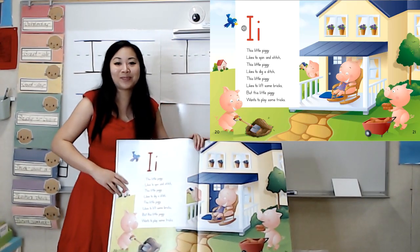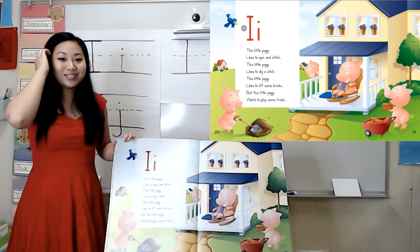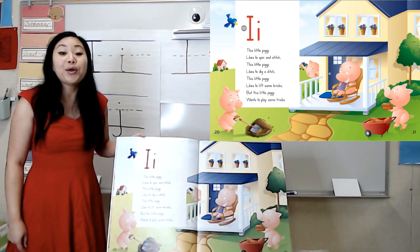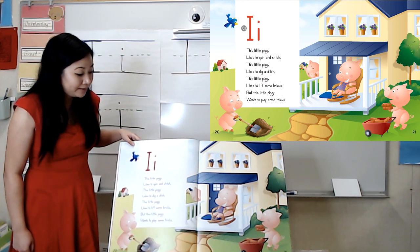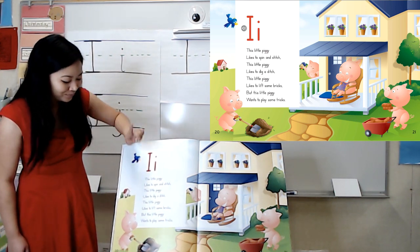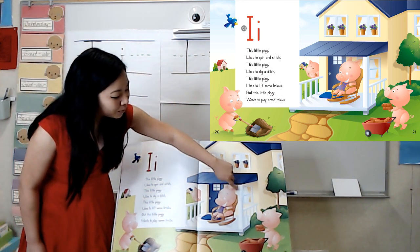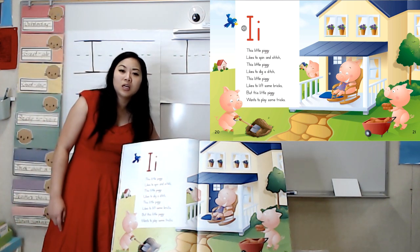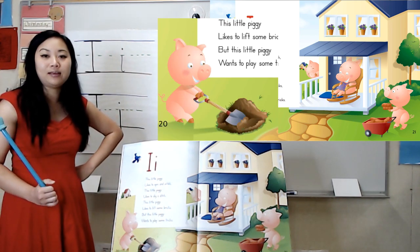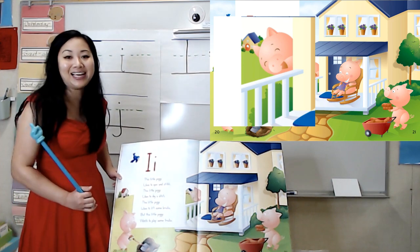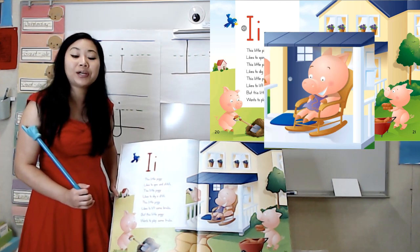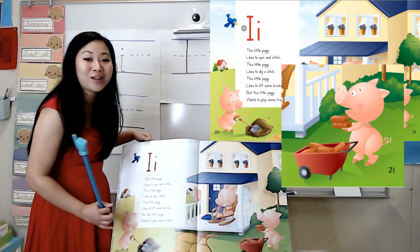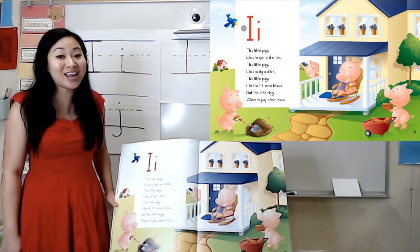And here we are. Let's make some observations. What do you notice about the illustrations on this page? You might say, I see some pigs. How many pigs are there? Let's count them — one, two, three, four. What are the pigs doing? Well, it looks like this pig is digging, and it looks like this pig is hiding. And this pig is sitting in a rocking chair, and it looks like they might be sewing something with a needle and thread. Oh, and this pig has a wheelbarrow full of bricks. Wow, we made a lot of great observations.